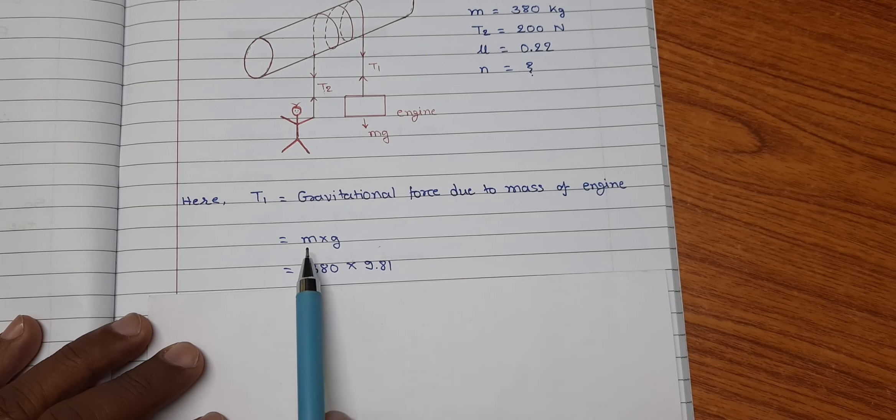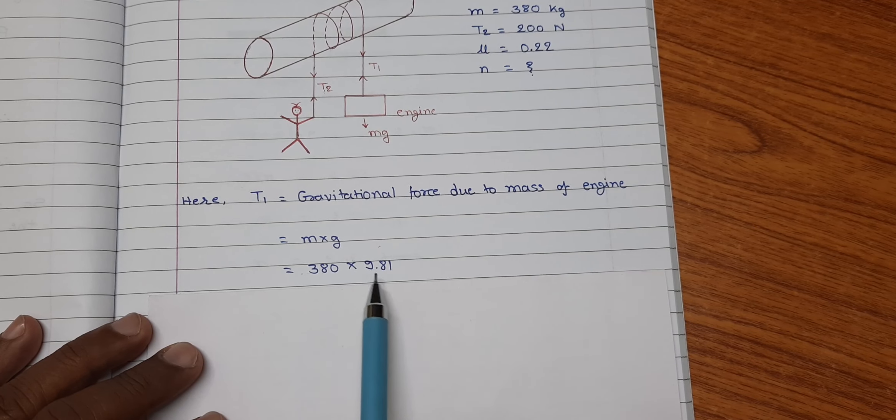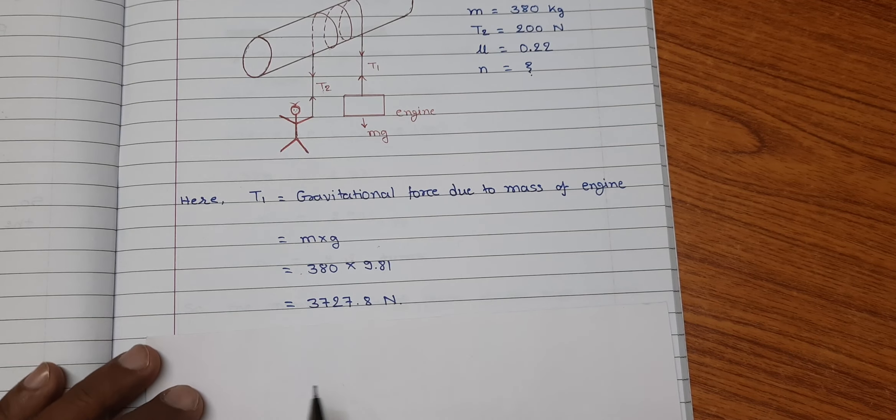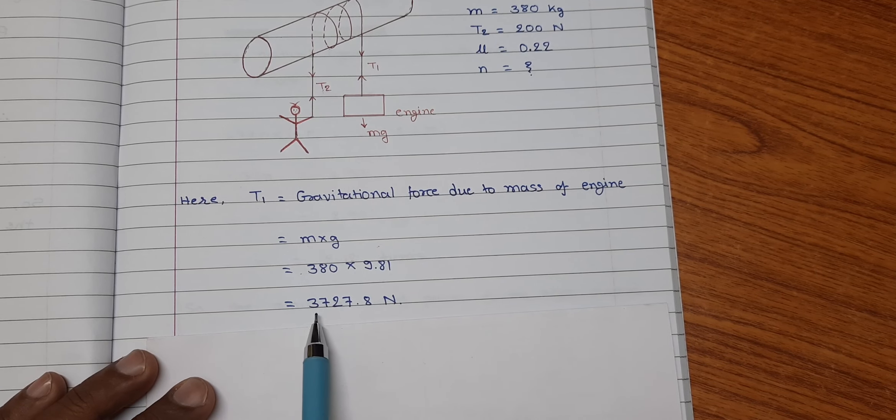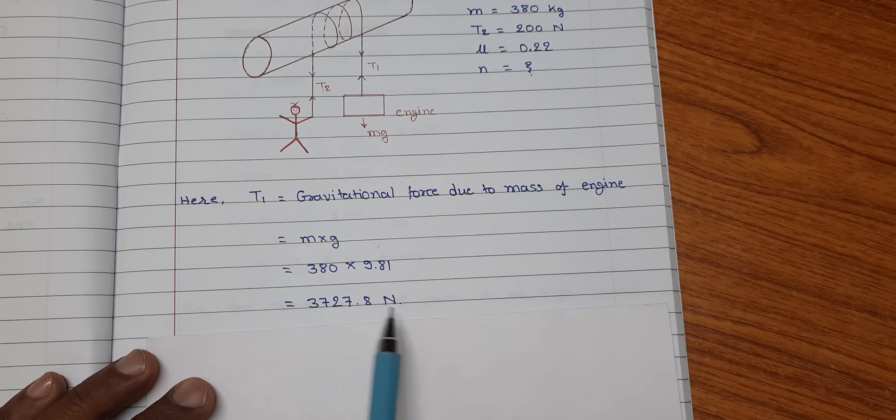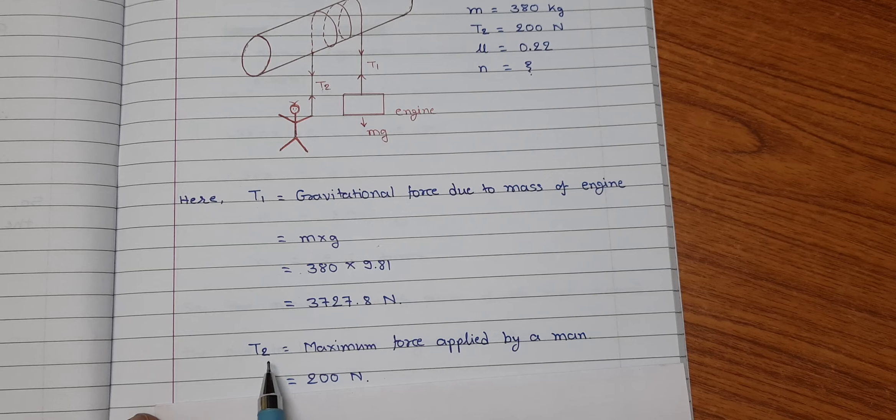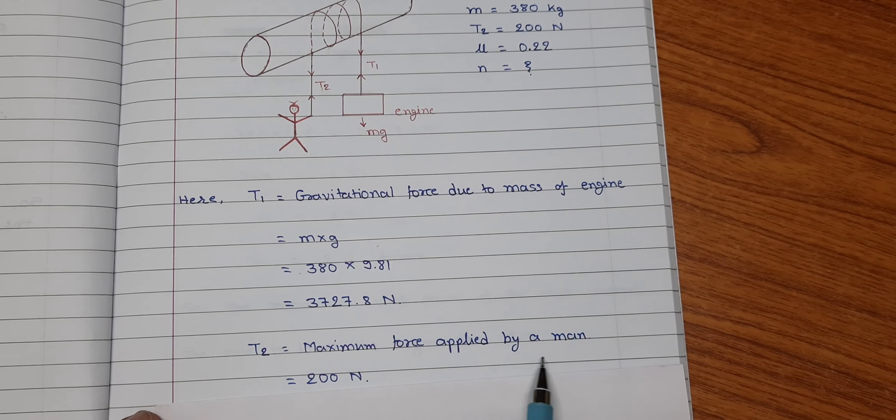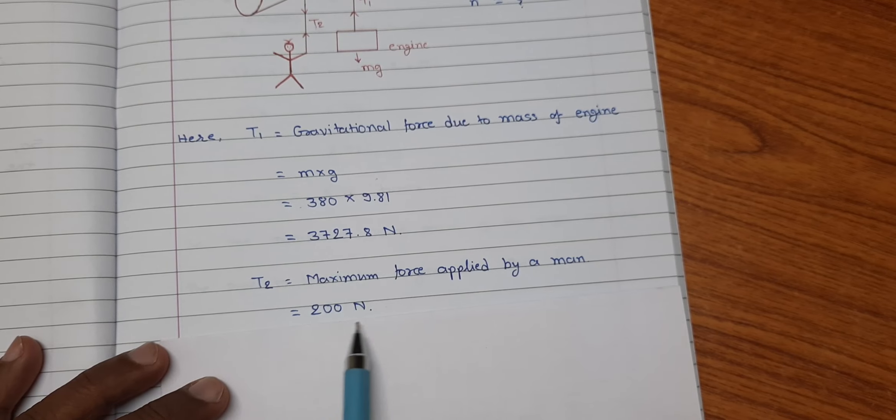Substituting the values, M mass of the engine is 380 kg and G value is 9.81. So, the tension T1 in the rope is 3727.8 N. T2 is the maximum force applied by man and it has been given is equal to 200 N.